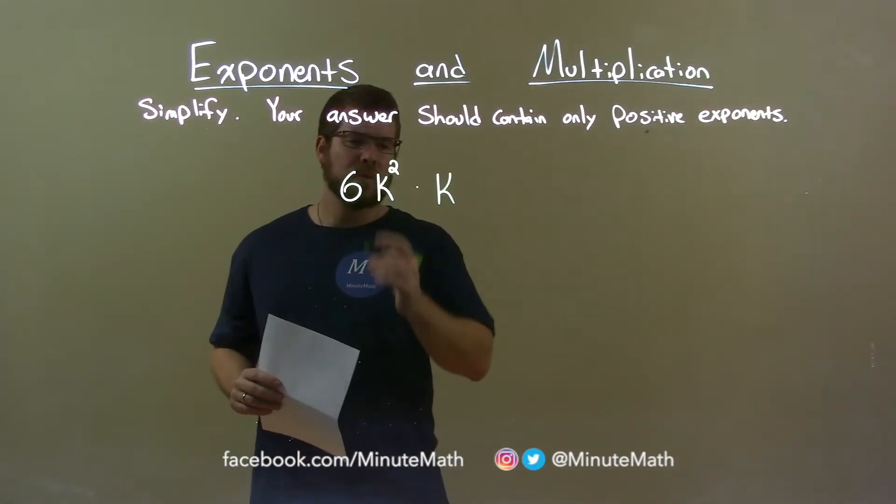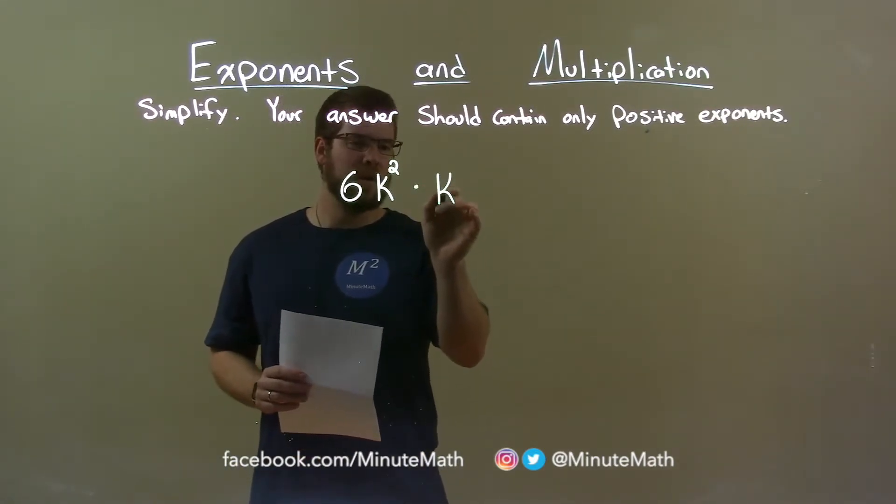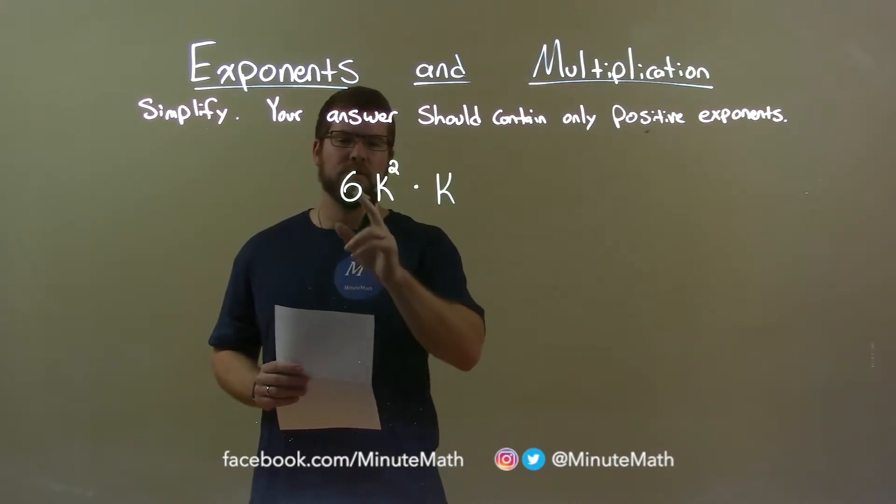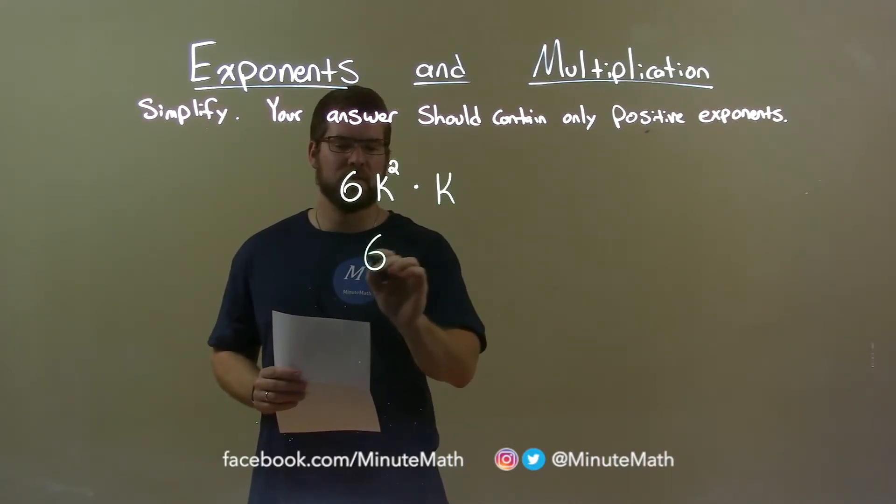Well, when we multiply these together, the coefficient in front of the second k is just a 1. We multiply the coefficients first. 6 times 1 is just 6.